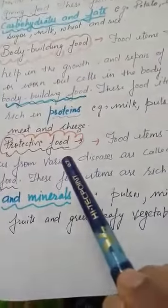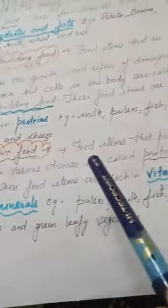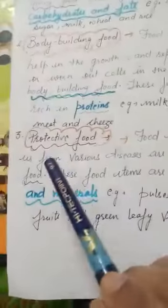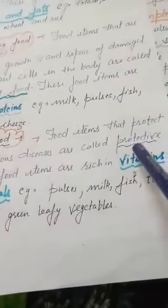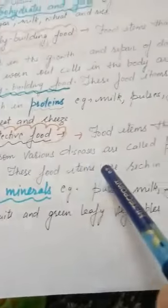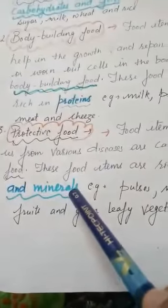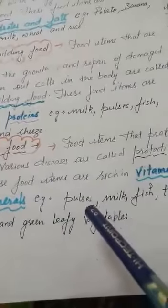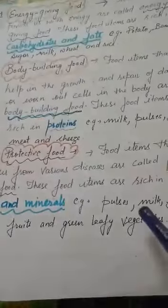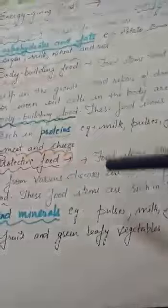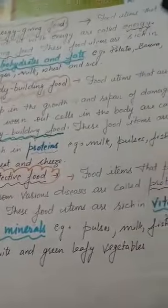Third is protective food. Food items that protect us from various diseases are called protective food. These food items are rich in vitamins and minerals. Examples include pulses, milk, fish, tomato, fruits, and green leafy vegetables.